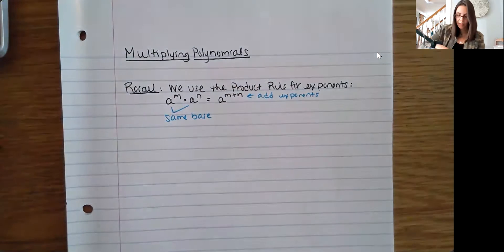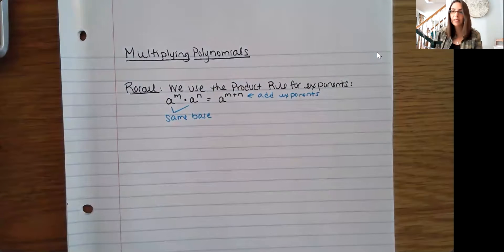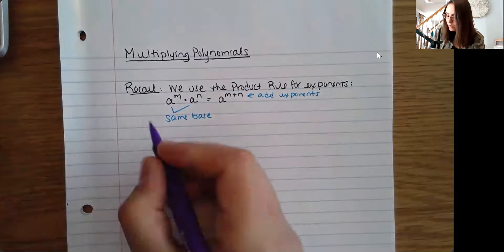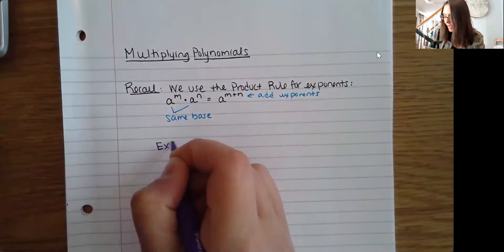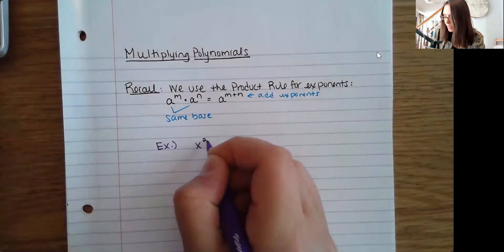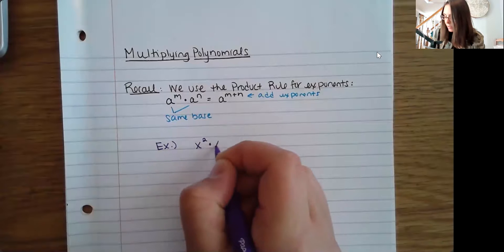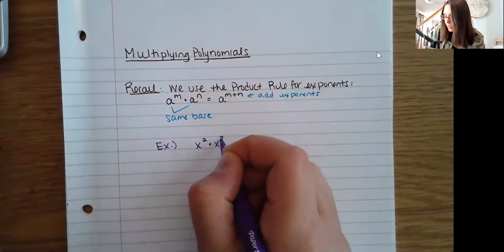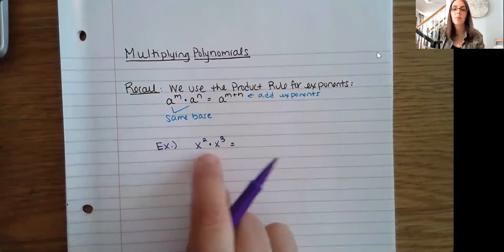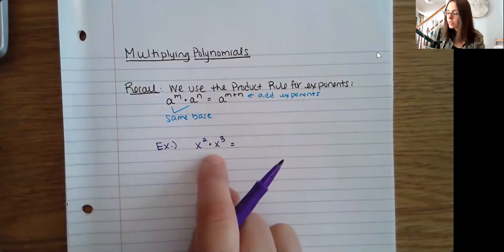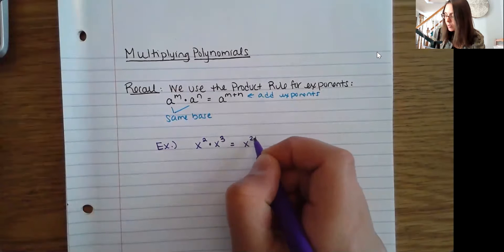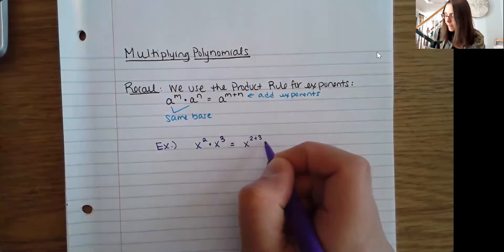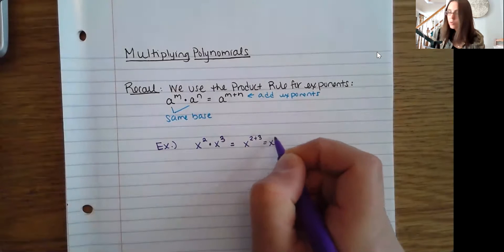Before I jump into longer examples, let's review that. For instance, if I have x squared times x cubed, I have the same base — they're both x's — so the shortcut says I can just add the exponents, and this becomes x to the fifth.